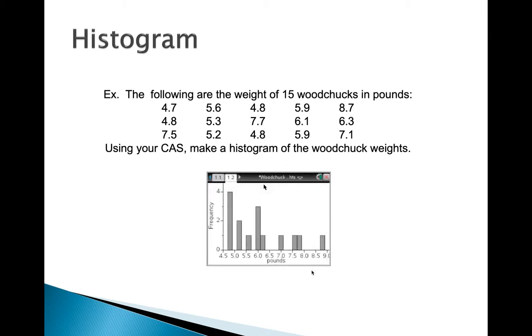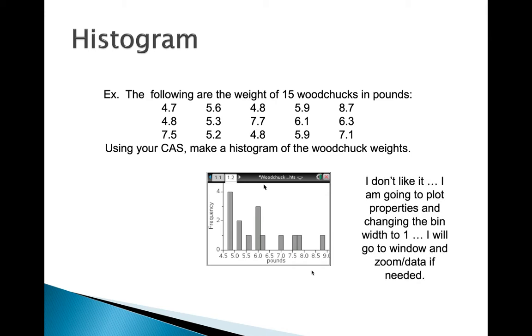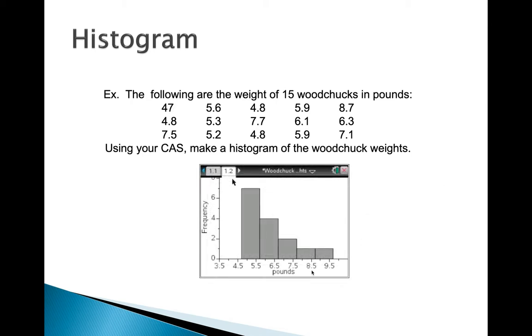Now I don't really like the way this histogram looks. It looks like they've divided it up into too many categories. So I'm going to change the bin width. And so to do that, I'm going to go to window and zoom data if needed. Once you've changed the bin width to one, right now it has the bin width at 0.5. Let's see if we make the bin width a little larger so we can put more weights in each bin if that gives us a better picture of what's going on. And again, zoom data will rescale it to fit what you've done with the data.